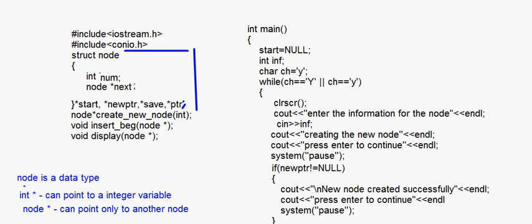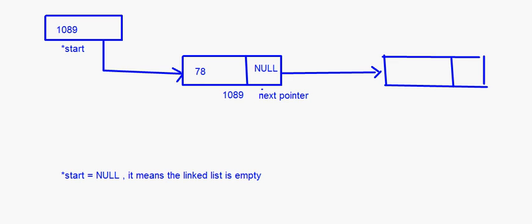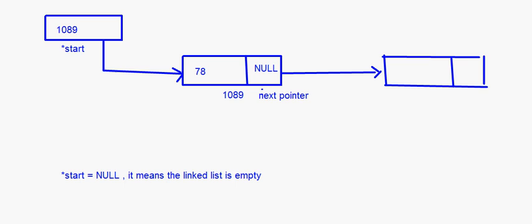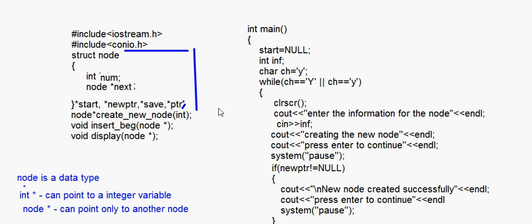We have the complete program for insertion in the linked list. The concept of the single linked list and the process of insertion at the beginning should be clearly understood. What we have seen here will be converted into C++ code, which we will take up in our next session. With that, I come to the end of this session on linked list.